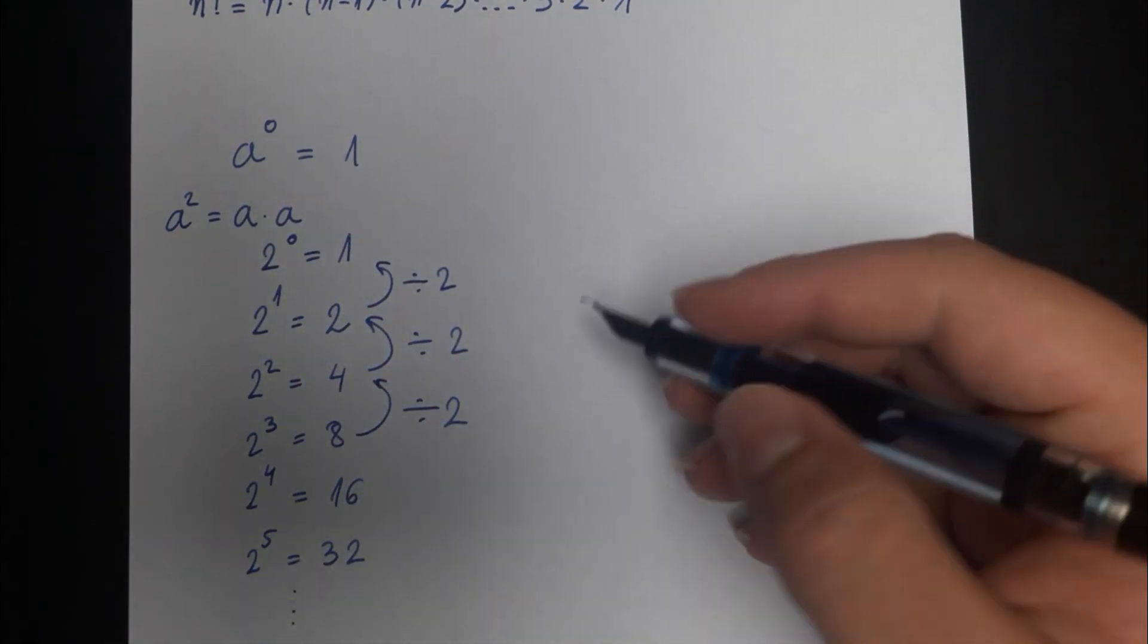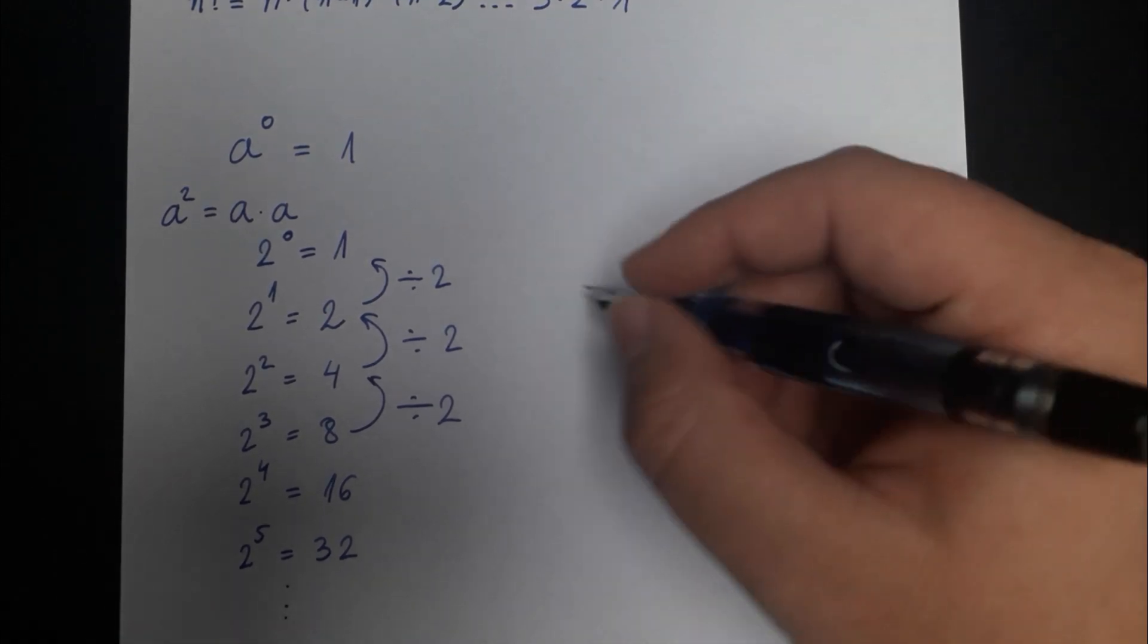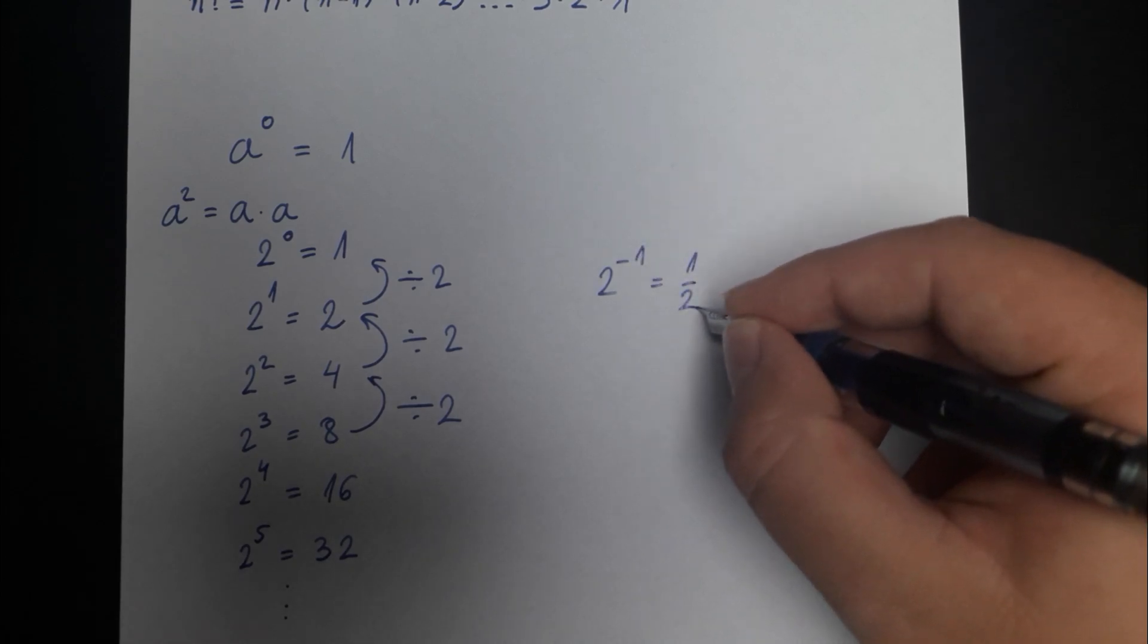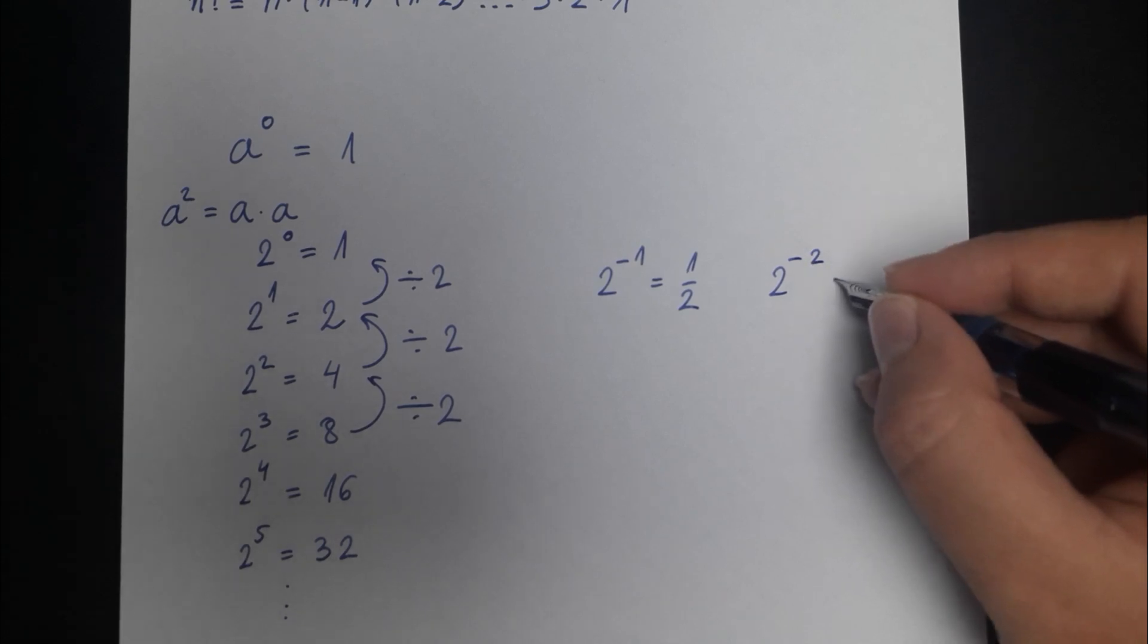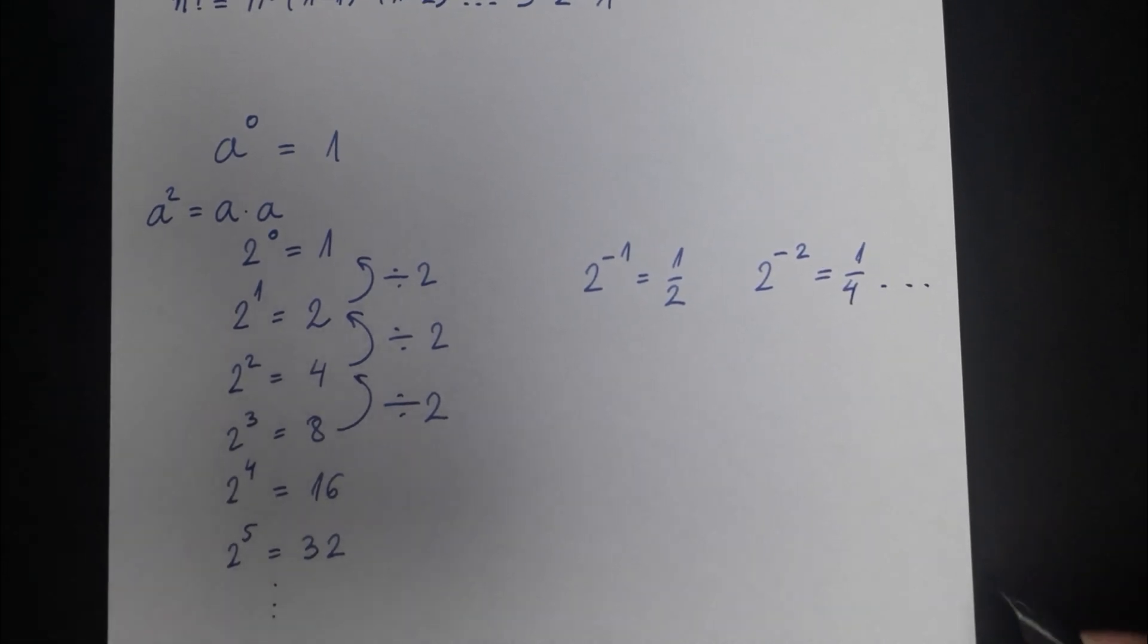And as you keep going the numbers keep making sense. So 2 to the negative 1 is equal to 1 half and 2 to the negative power of 2 is equal to 1 quarter and so on.